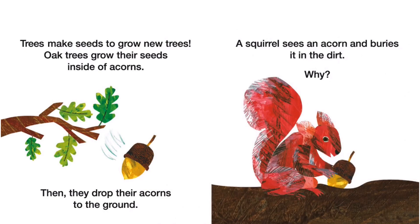Trees make seeds to grow new trees. Oak trees grow their seeds inside of acorns, then they drop their acorns to the ground. A squirrel sees an acorn and buries it in the dirt. Why?